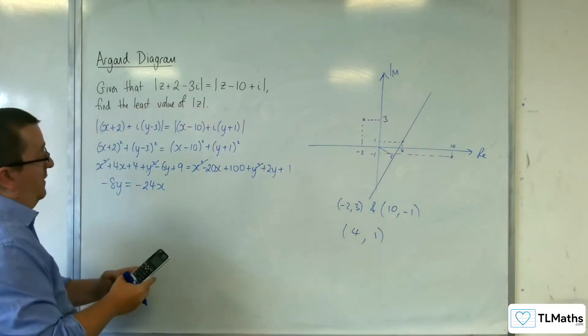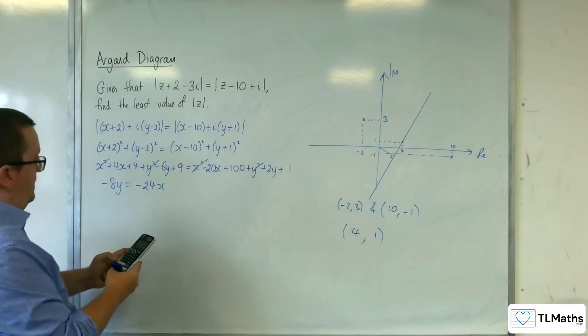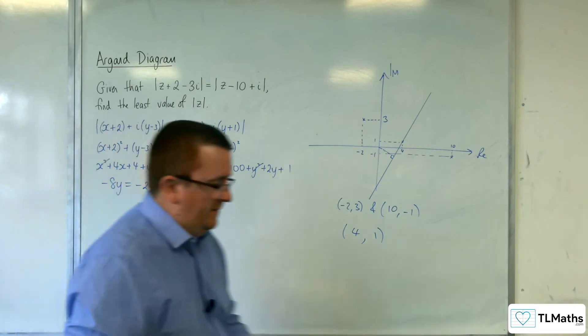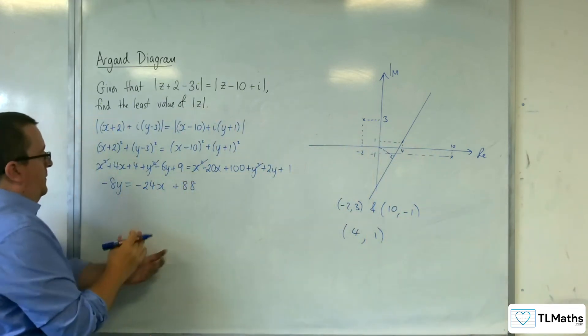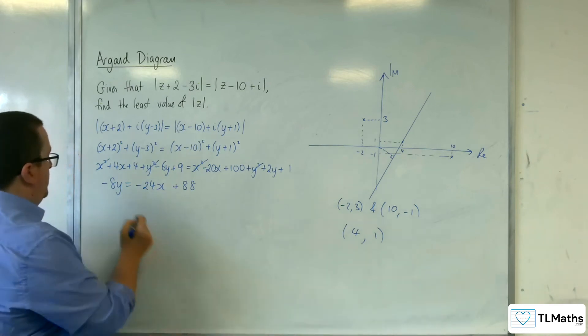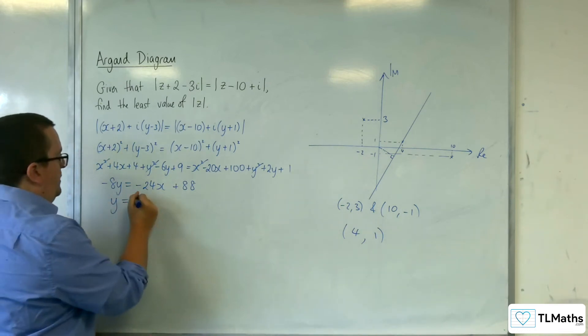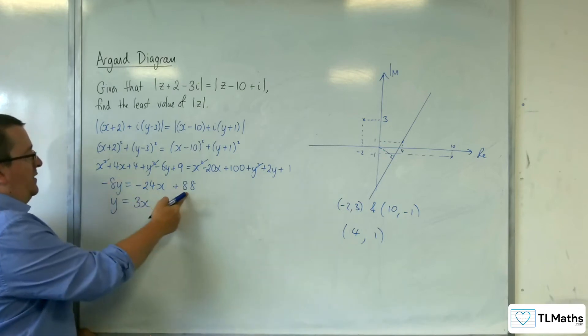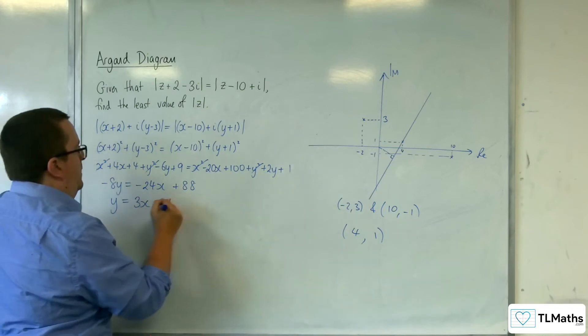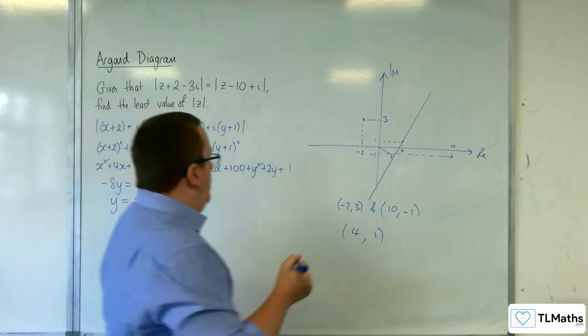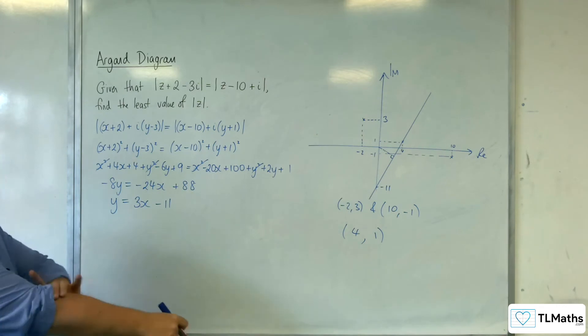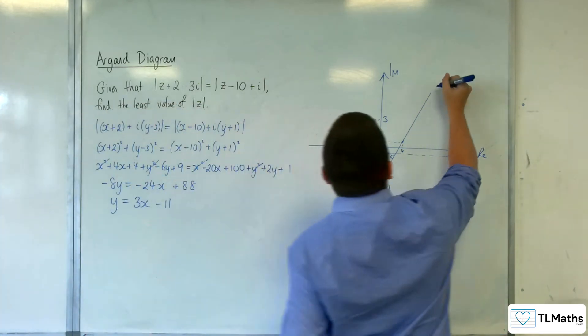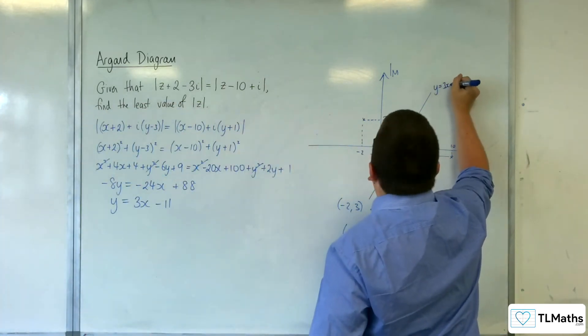Let's just double-check. I don't want to make a mistake at this stage. Take away the 9, take away the 4, yeah 88. Always worth checking. Then we can divide through by the minus 8. So y is equal to minus 24 divided by minus 8 is 3, so 3x. 88 divided by minus 8 is minus 11. So 3x take away 11. So that point is minus 11. That's the equation of our perpendicular bisector.